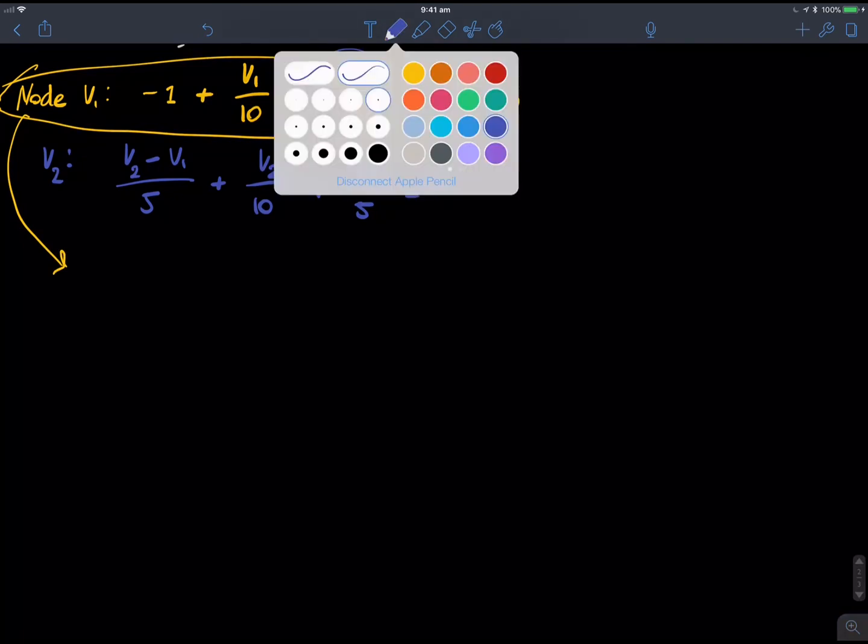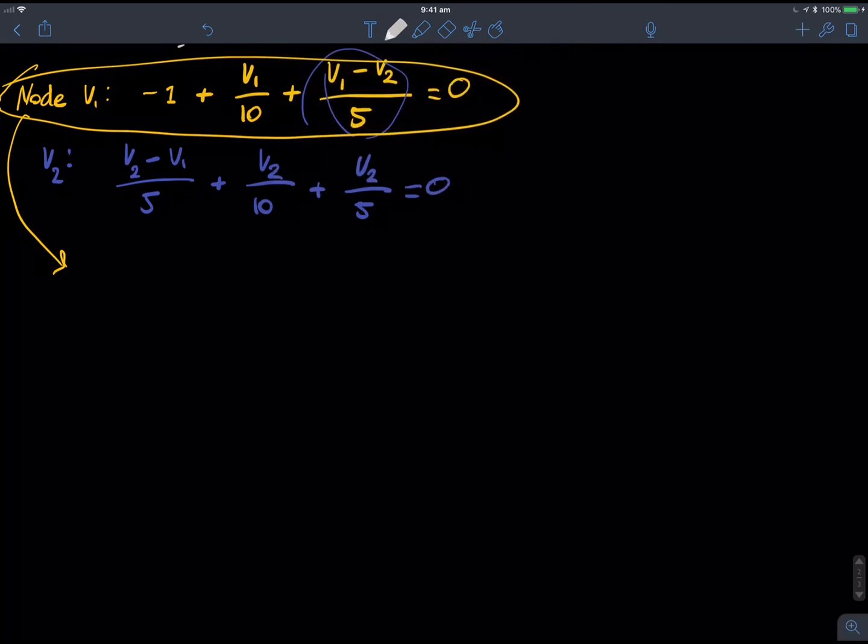So, I'm going to take this node V1 equation up here, and I'm going to solve it for V1. I'm going to use the substitution method. So, first of all, I'm just going to bring the 1 over. Just add 1 to both sides equals V1 on 10.